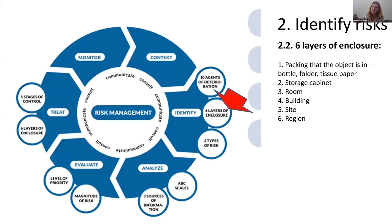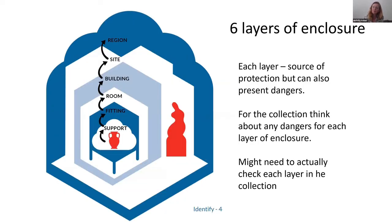Once you've identified the risks, you also have to think at what level — at what layer — that risk exists. We use six layers of enclosure: the bottles or containers that the specimens are in, the drawers they're in, the shelves or cabinets, the room, the building, the site, and the region. A risk can be at more than one layer — it could be at all layers, or only one. This is important because that's where your mitigation, where you're going to intervene.